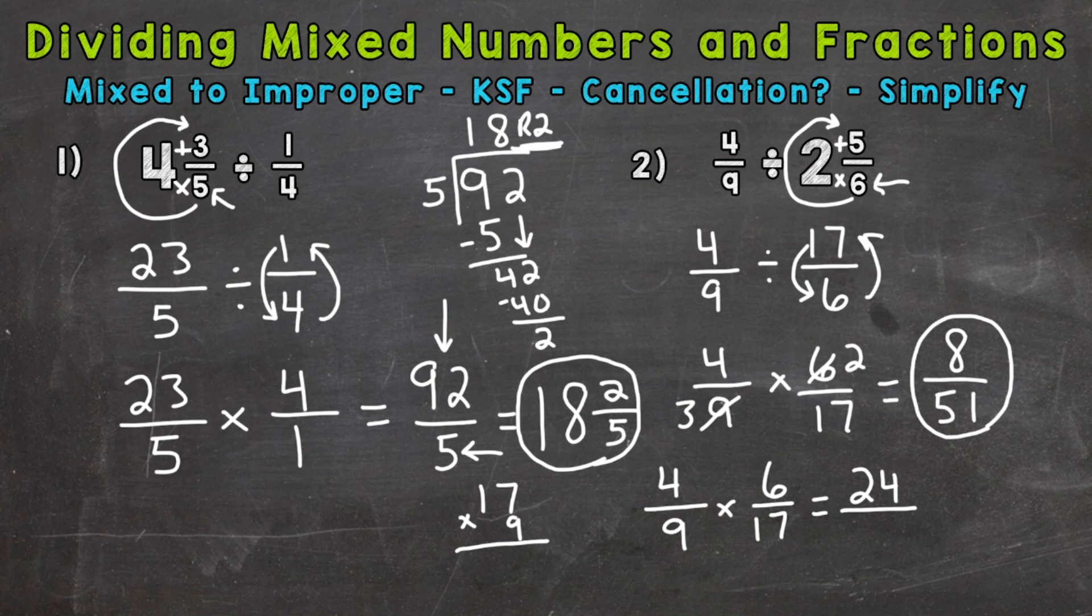9 times 7, 63. 9 times 1 is 9, plus 6 is 15. So we get to an answer of 153. So 24 over 153. So that is our final answer.